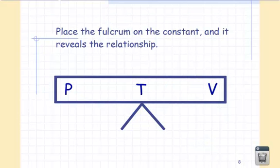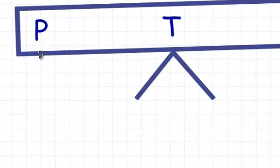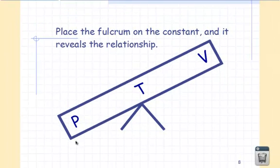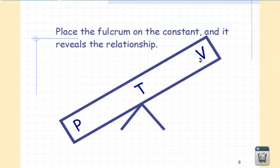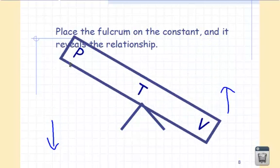If you place the fulcrum at the constant variable, here's the relationship. This represents Boyle's Law — temperature is held constant, and we have P, T, V. An easy way to remember is it's alphabetical. If the pressure goes down, the volume goes up. So the relationship between pressure and volume is the opposite: pressure down, volume up; pressure up, volume down.